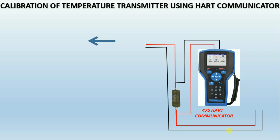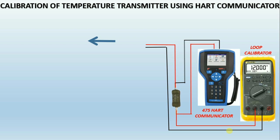What is a loop calibrator? For process calibration professionals, loop calibrators are essential tools for working with 4 to 20 milliamp current loops. Process control loop calibrators provide milliamp sourcing, simulation, and measurement, with readouts in both milliamps and percent of span, and a 24-volt loop supply.